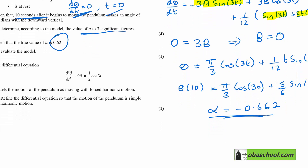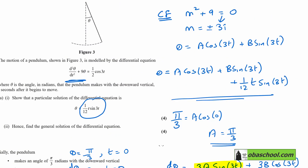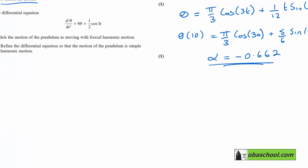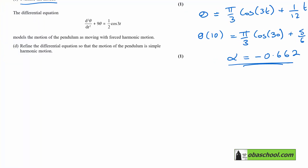The true value of α is 0.62. The negative sign just indicates which side of the vertical the pendulum is on, so the values are very close in magnitude — meaning this is a good model at this time. Finally, to refine the equation so the pendulum undergoes simple harmonic motion, we drop the forcing term ½cos(3t) from the right-hand side, leaving just d²θ/dt² + 9θ = 0.